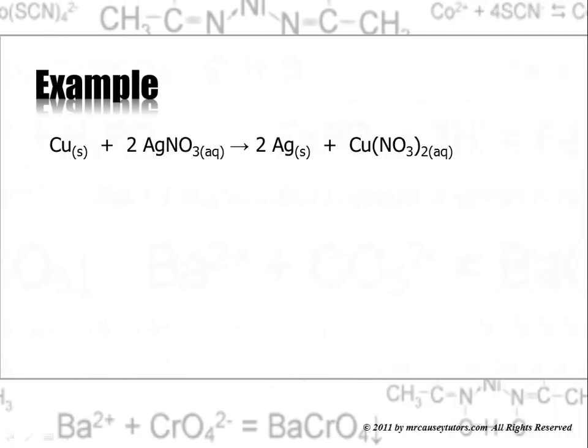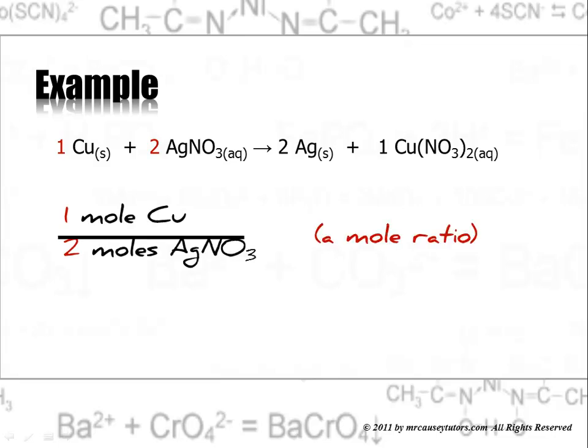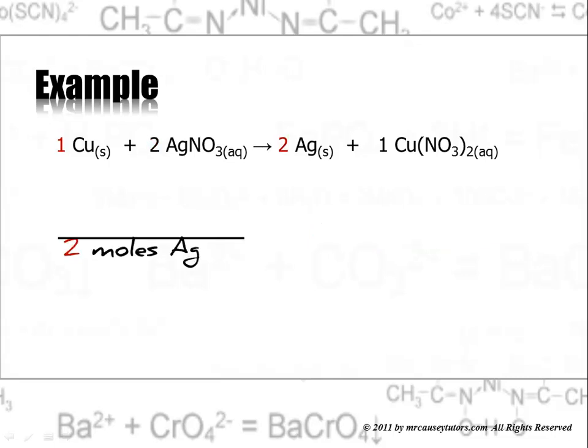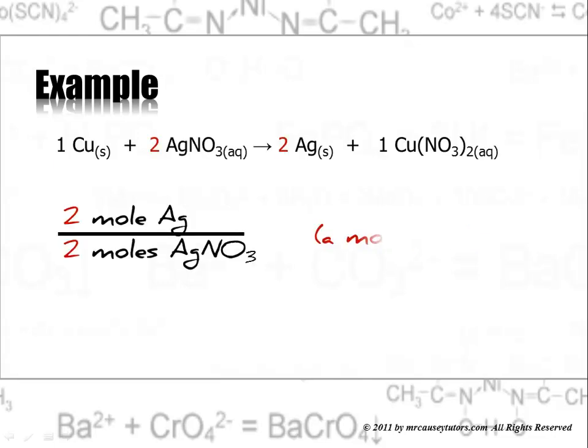In this example we have copper and silver nitrate. There's the mole to mole ratio: one mole of copper for two moles of silver nitrate. Let's look at another one. One mole of copper to two moles of silver. These are mole ratios that we can use to do magical things. Two moles of silver to two moles of silver nitrate, which reduces to a one to one relationship.